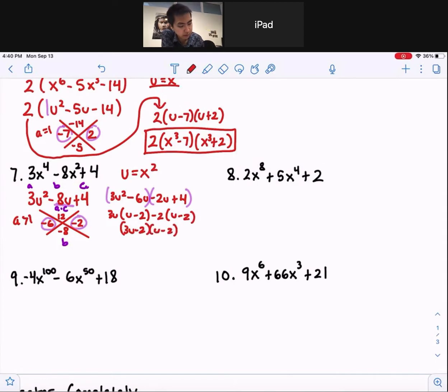Now again, plug in our x squared in for u: 3x squared minus 2, x squared minus 2. And there's our factors.